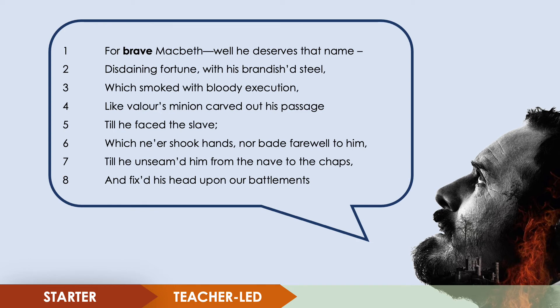Line three: 'Which smoked with bloody execution.' This could be a metaphor or a more literal interpretation showing that Macbeth has hot blood on his sword — and remember, we're in Scotland with harsher winters, so blood could literally be steaming from his sword. Line four: 'Like Valour's minion carves out his passage' — a simile suggesting Macbeth is chopping skillfully through his enemy like the personification of valour or honour. Line five: 'Till he faced the slave.' The slave here refers to Macdonwald, the former Thane of Cawdor, showing that Macbeth faces the other Thane himself in battle.